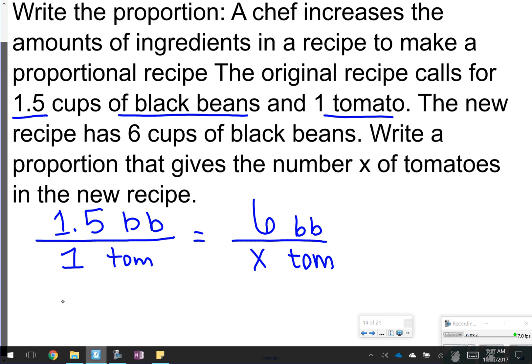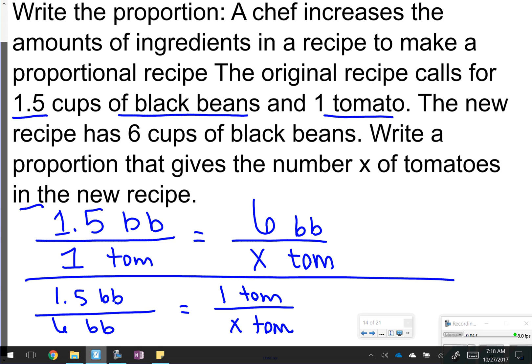Remember, you could also write it like this: 1.5 black beans, and then your equivalent rate or ratio across from it, 1 tomato, 6 black beans, and right across from that, X tomatoes. So that's another way you can write it as well. This way, though, is probably the most popular way.